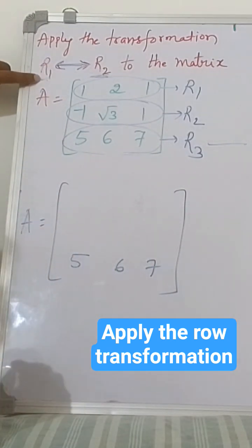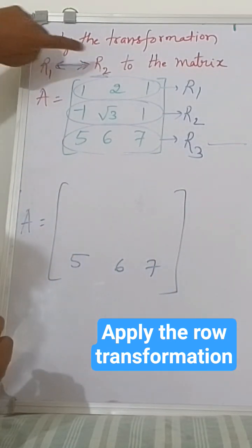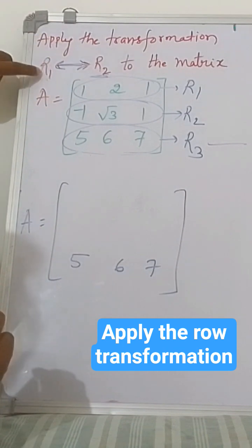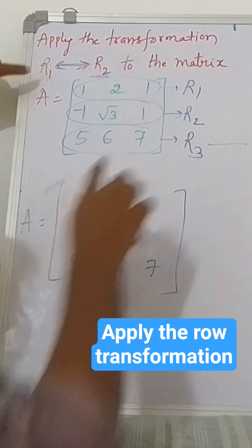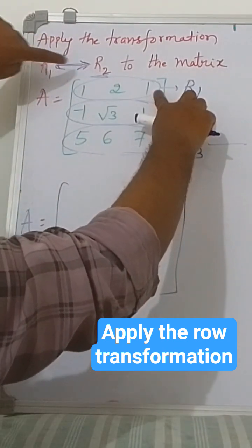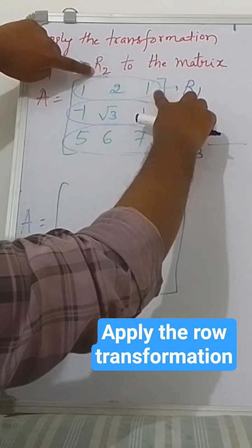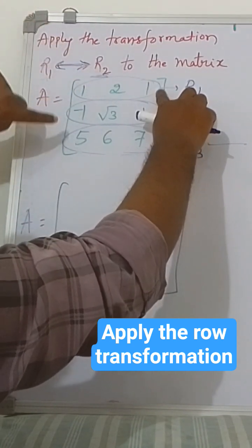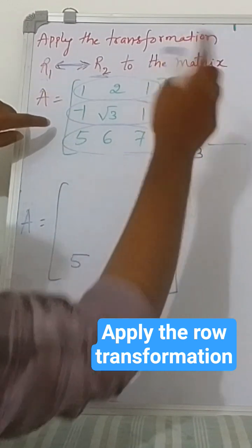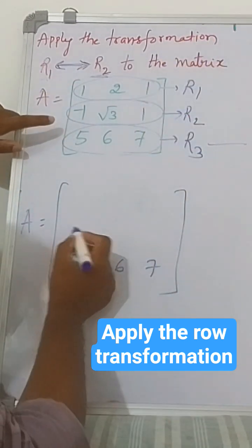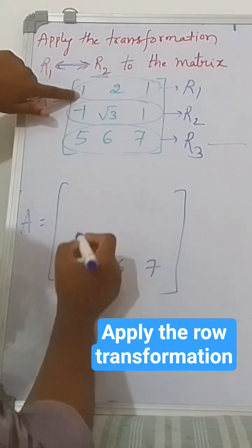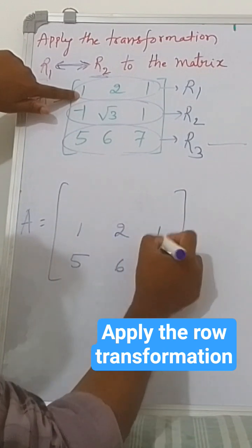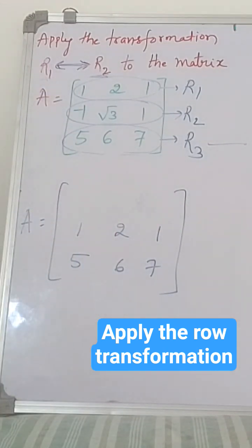Next, interchange r1 and r2. That means first I will consider r1. Interchange to change into r2, that means write r1 in the place of r2. r2 is this here, so r1 I am writing here: one, two, one.